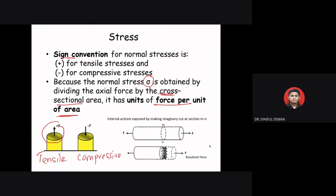The continuously distributed stress acts over the entire cross section, and the axial force F acting at the cross section is the resultant of those stresses. In general, the stress acting on a plane may vary in intensity, but for simplicity we assume the stress on the cross section is uniformly distributed. Remember that stress is the quantity that describes the distribution of internal forces within a body.